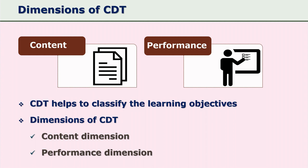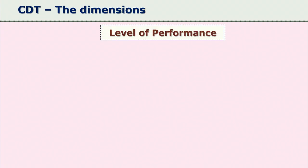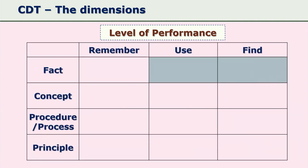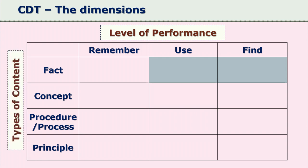The matrix suggested by Component Display Theory helps us classify learning objectives. The performance-content matrix shows levels of performance in rows. Remember, use, and find are the three performances suggested by Component Display Theory.